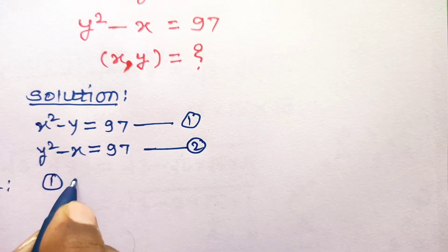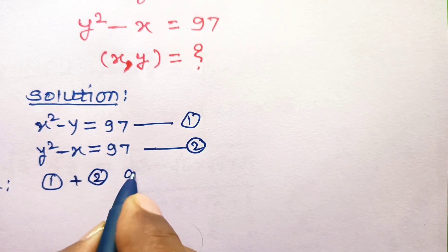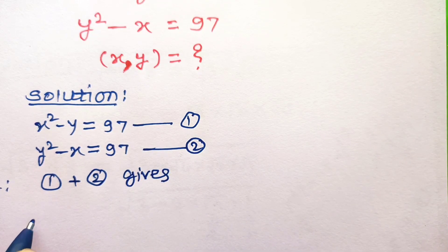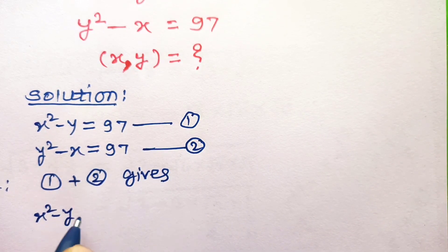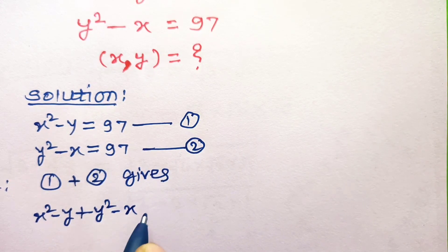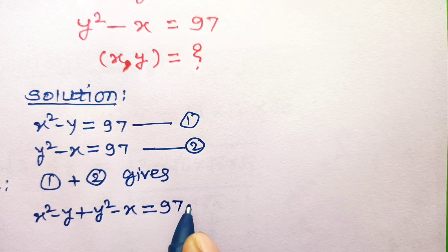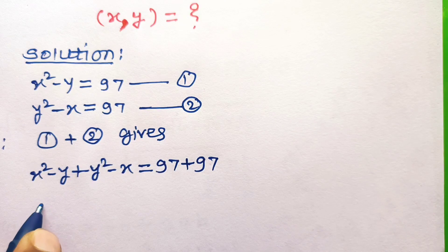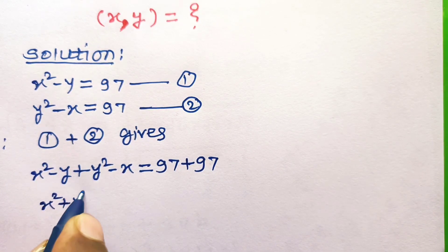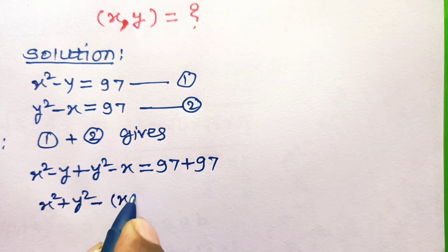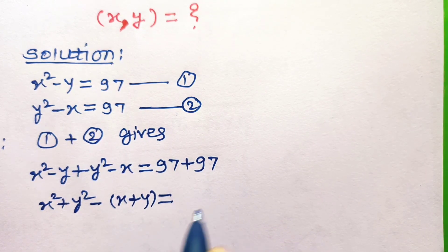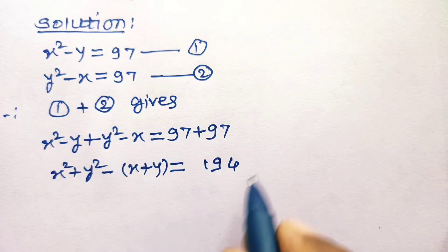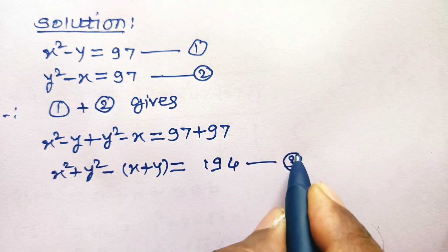Equation number 1 plus equation number 2 gives: the addition of left-hand sides equals the addition of right-hand sides. Hence, x squared minus y plus y squared minus x is equal to 97 plus 97. This gives x squared plus y squared minus (x plus y) is equal to 194. Consider this equation number 3.